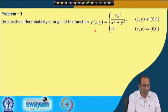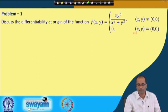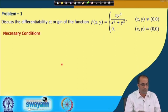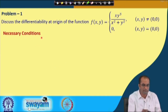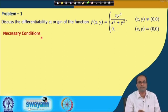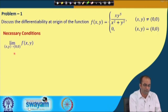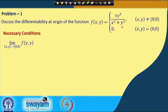Let us discuss the differentiability at the origin of f(x,y) = xy³/(x²+y²), defined as 0 when (x,y) = (0,0). First we check the necessary conditions, which the function must satisfy before testing differentiability. For continuity, when (x,y) → 0, we change to polar coordinates: the denominator gives r², the numerator gives r⁴ terms, leaving r² in the numerator with cos and sin, so the limit goes to 0.